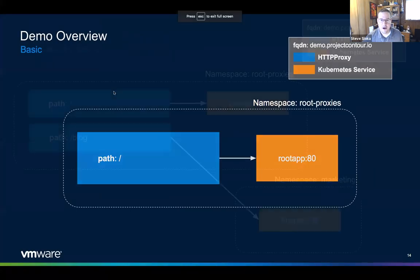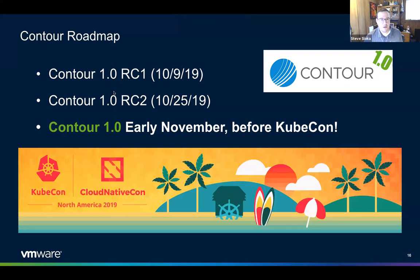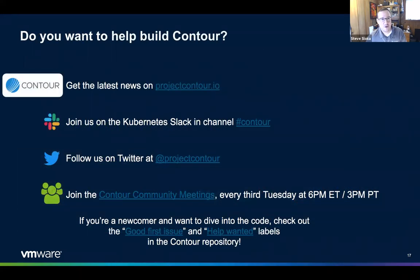That is all the demo. Thanks for everyone sticking around. Here's a quick overview of the Contour roadmap. Contour is going to hit 1.0 in early November — tomorrow we're shipping an RC1, next week an RC2, and then come hang out with us at KubeCon where much of the team will be. I'm speaking at EnvoyCon. Here's how to get started with Contour: check us out at projectcontour.io. We have a Slack channel in Kubernetes — hashtag contour. You can follow us on Twitter. We have community meetings every third Tuesday. We also have issues labeled good-first-issue and help-wanted if you want to contribute.